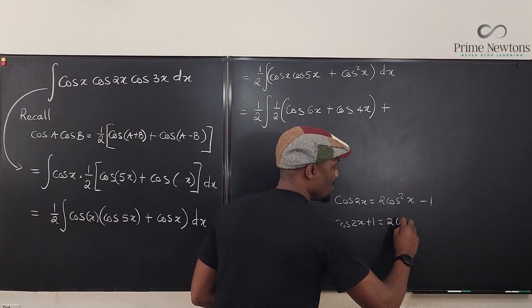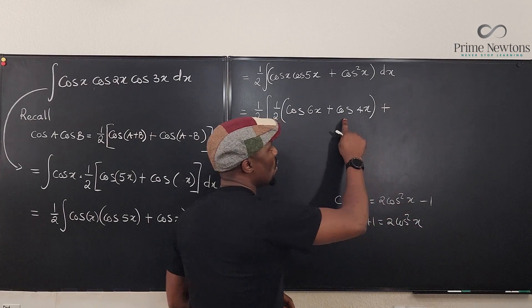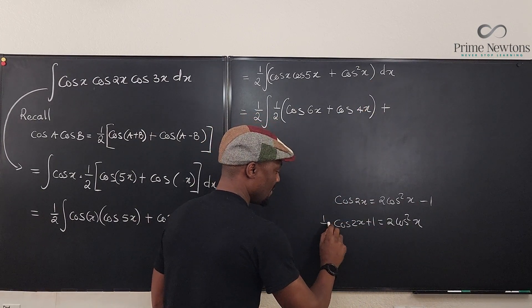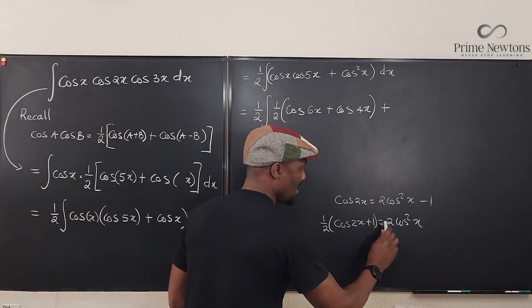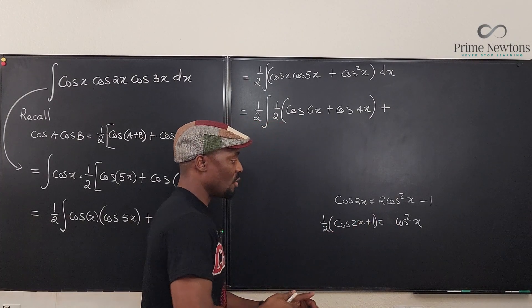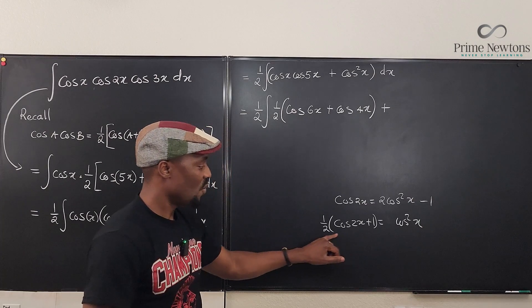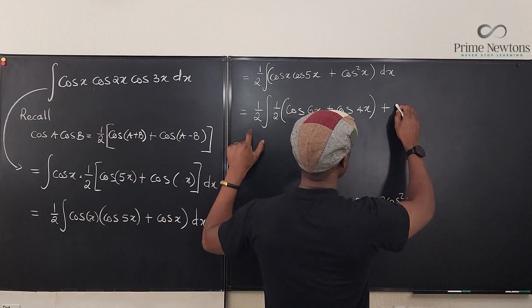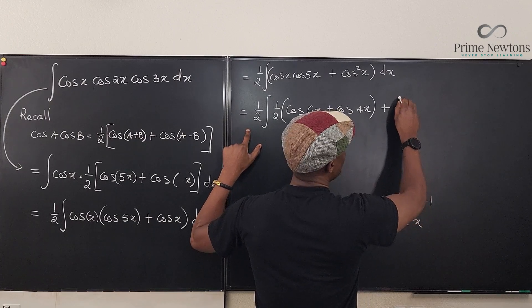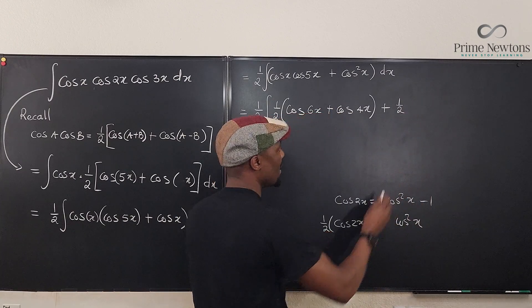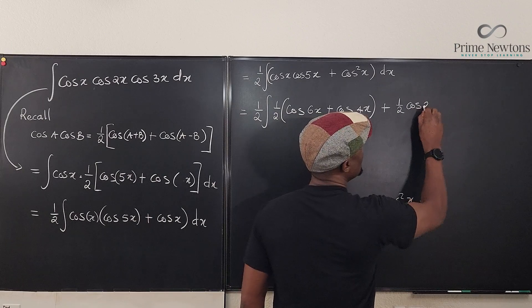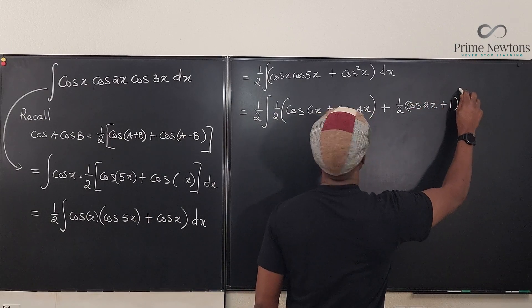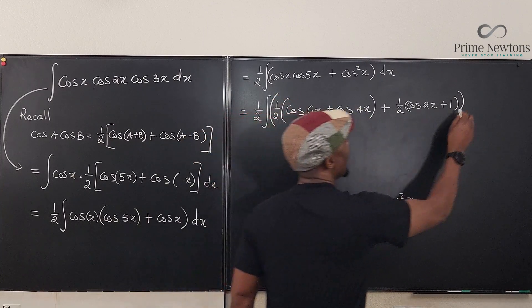So here we want to write this isolated. So if you move this one here, you have cosine 2x plus 1 equals 2 cosine squared x. So cosine squared x can be replaced by, if you divide both sides by 2, that's it. So I'm going to replace cosine squared x with this identity, which is going to be 1 half of cosine 2x plus 1. And everything is still dx.